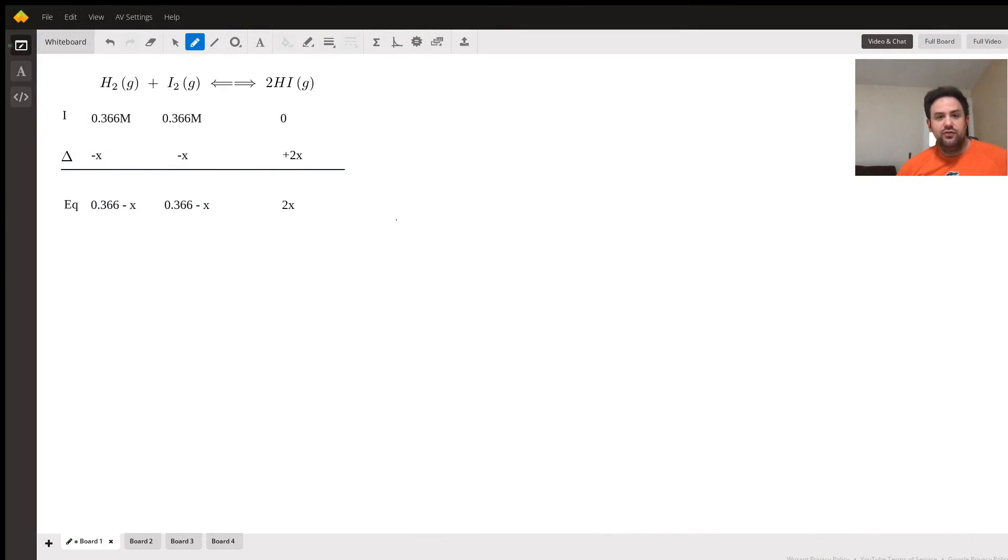Hi Abraham, I'd love to answer this question for you. What we have is an equilibrium reaction involving hydrogen gas and iodine gas to form hydroiodic acid. I went ahead and drew an ICE table for us. Let's see what we have - we're starting out with 0.366 moles of both of our reactants and none of our products.